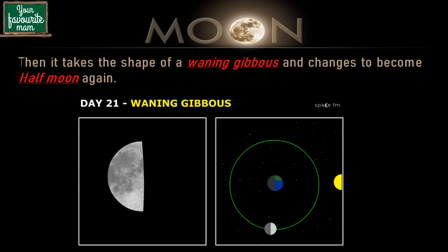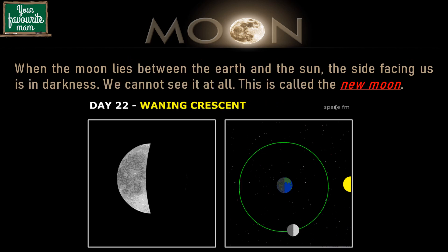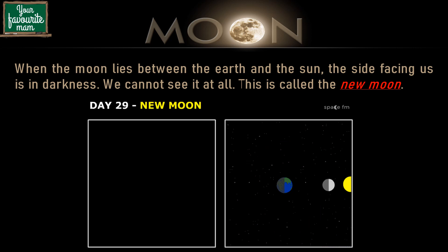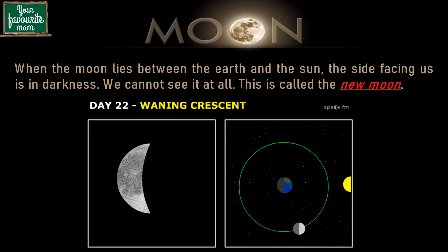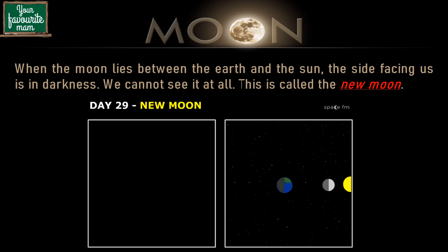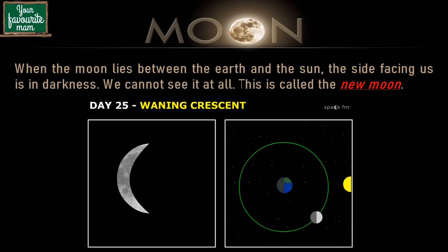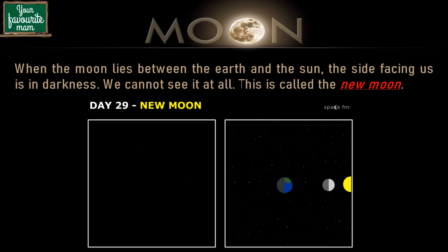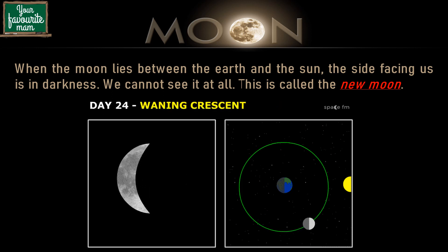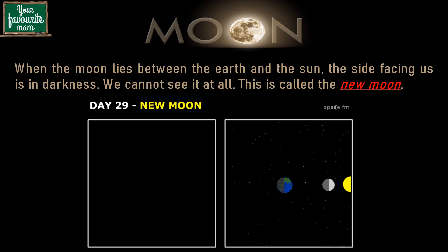The third quarter is the opposite of the half illuminated in the first quarter moon. After the waning gibbous phase, we see the moon entering into a waning crescent phase as a thin crescent opening to the right, and then the moon enters into a new moon phase again. The moon displays these eight phases one after the other as it moves through its cycle each month. It takes 27 days for the moon to orbit the earth, so the moon cycle is 27 days long.